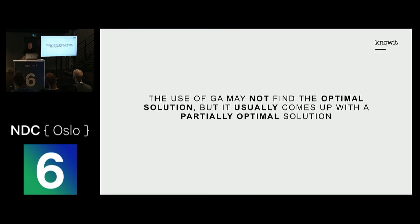I chose this because genetic algorithms may not find the optimal solution, but they usually find a partially optimal solution. Clinical guidelines for people with low back pain say that keeping active is the most important part — do exercises from a pool, and it's not critical exactly which exercises or at what level, as long as you stay active.